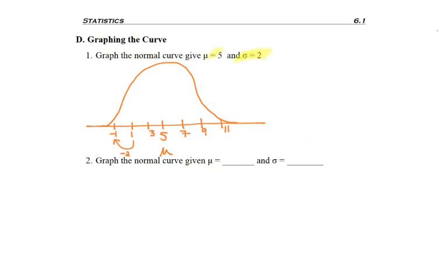So what's happening here is our normal curve, we're saying goes from negative 1 to 11, knowing that that's really 99.7% of our curve.